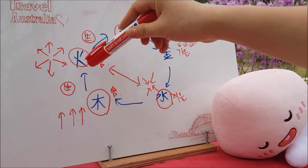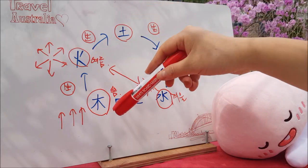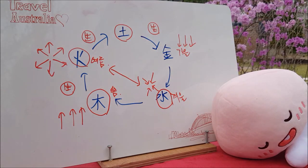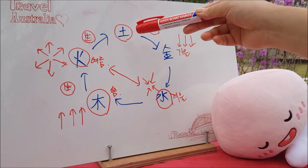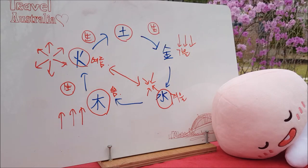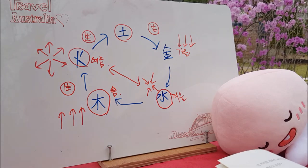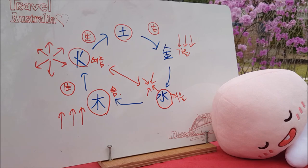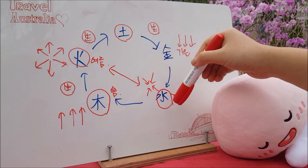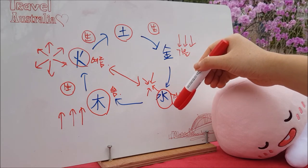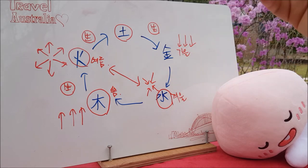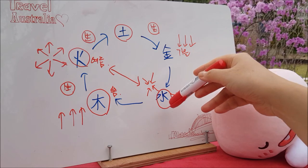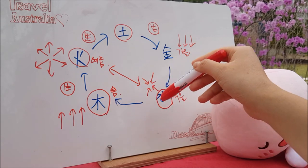목이 화를 생한다고 했습니다. 그리고 화는 그러한 목을 돕고요. 화는 토를 생하고 토는 역시 화를 돕습니다. 토는 금을 생하고 금은 토를 돕습니다. 금은 수를 생하고 수는 금을 돕습니다. 수가 목을 생하고 목은 수를 돕습니다.